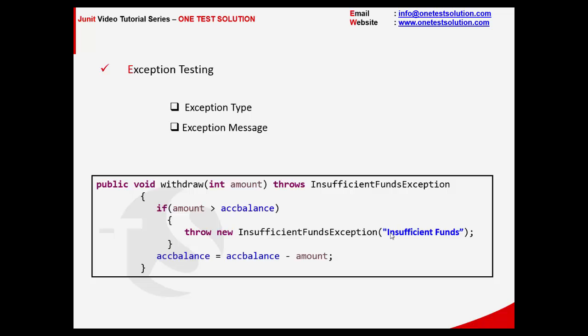There are two types of validation that can be performed as far as exception testing is concerned. One is the exception type — for example, the exception that this withdraw method throws is InsufficientFundsException. The second validation we can do is test the exception message, because this is the message that the user will see at his end.